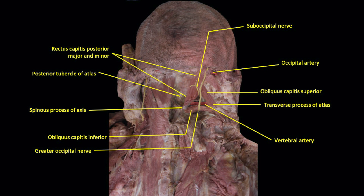Hence, the answer to the question of what is found in the suboccipital triangle includes the vertebral artery and the suboccipital nerve, and of course the suboccipital venous plexus, though this is hard to show in a cadaveric dissection.